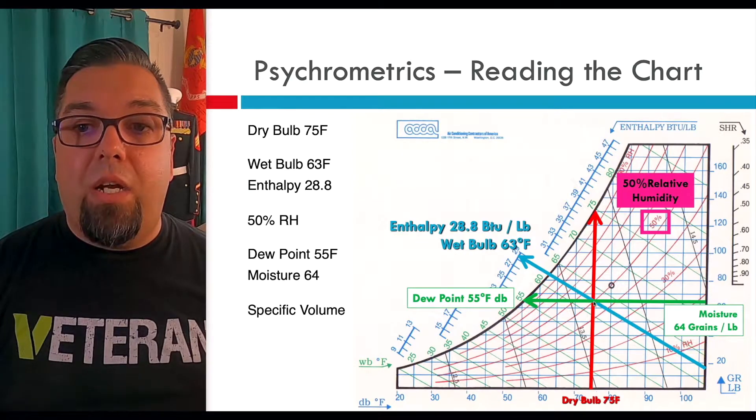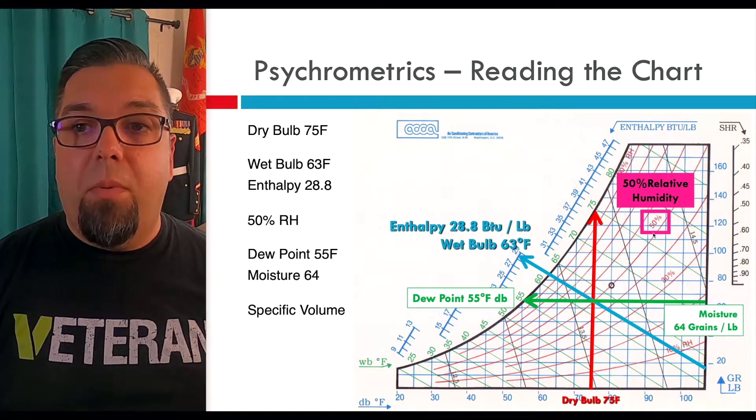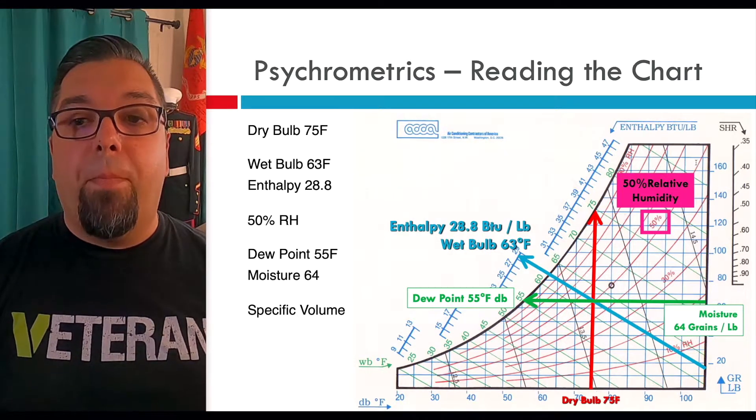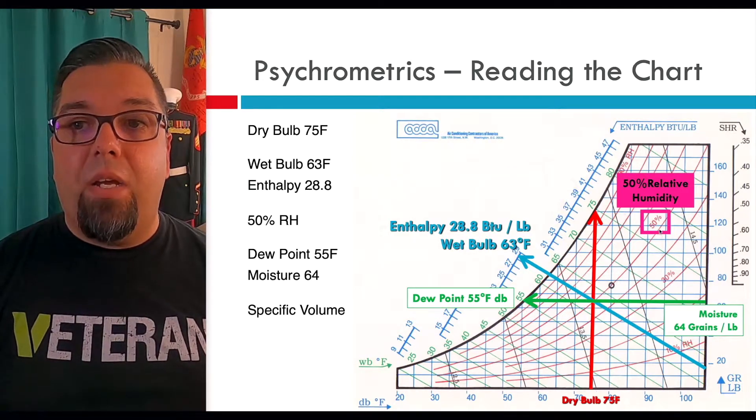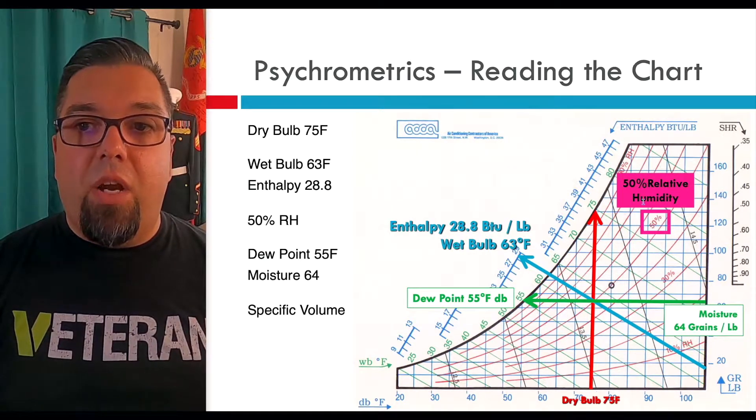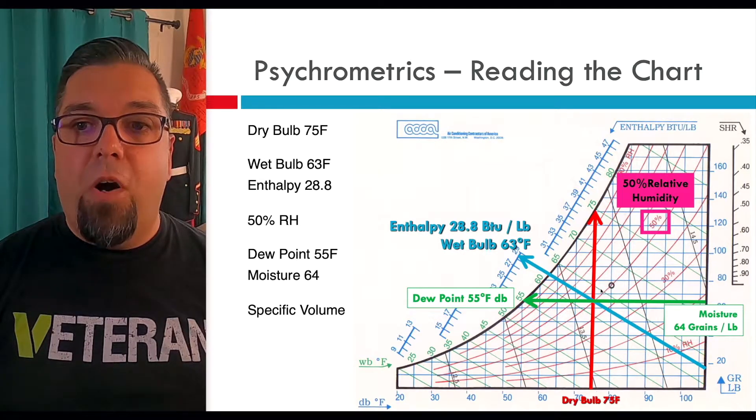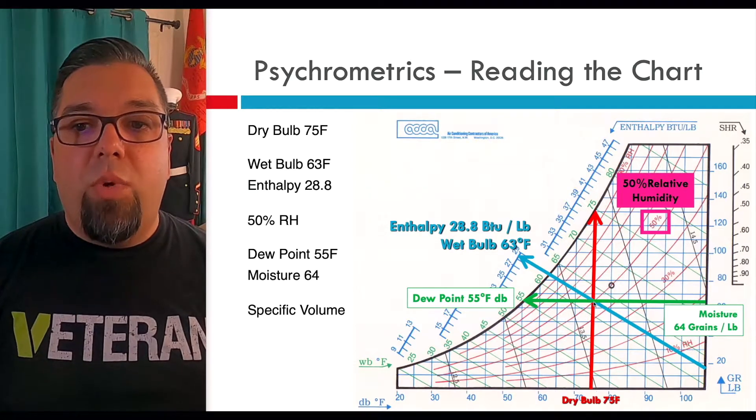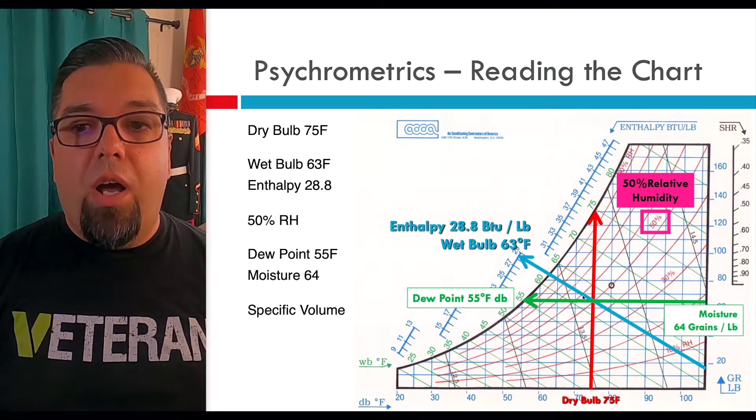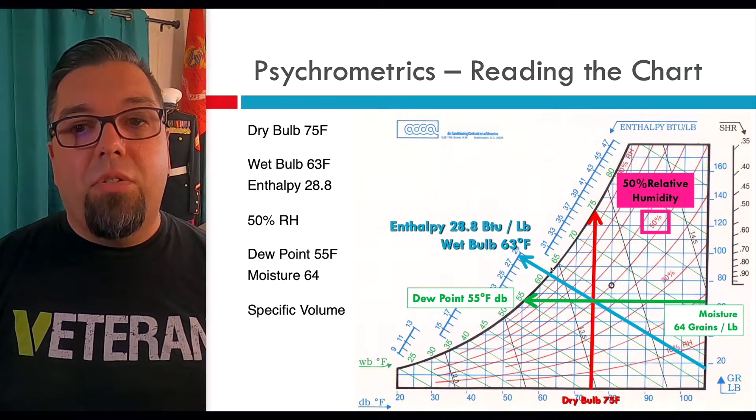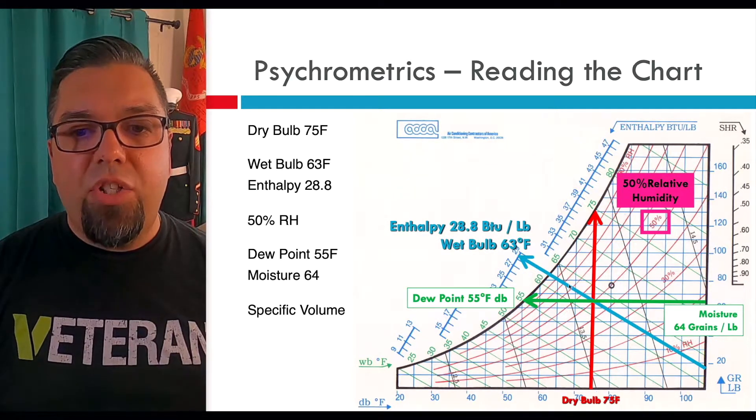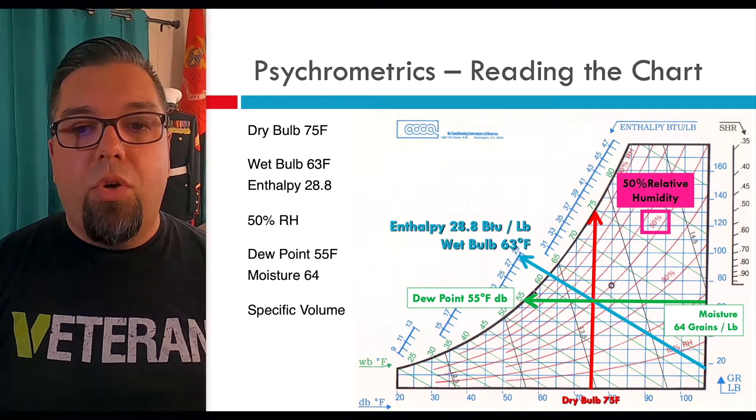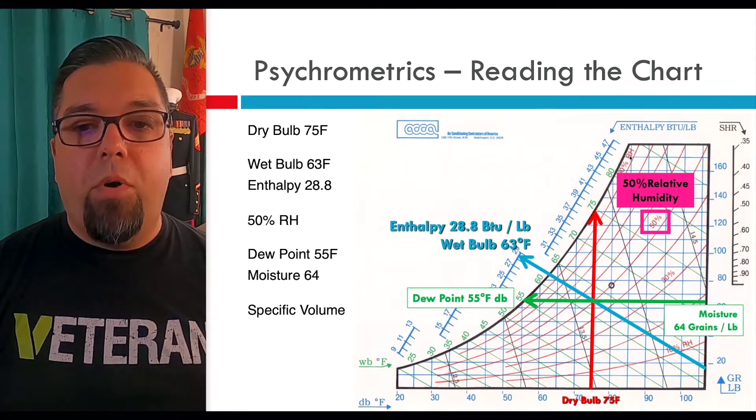As long as you have two pieces of information off the left hand side here you can plot and know everything else that's going on with the air off of the psychrometric chart. In this example I'm going to use our design temperature 75 dry bulb and 50% relative humidity and when I plot that point here right here on this 50% relative humidity, remember relative humidity are these curved lines that go from the bottom left to the top right and it's in pink or red. I blocked off the 50% line so you can see where it intersects our dry bulb at 75 degrees. If we draw a perpendicular line up you can see it's actually going to intersect with 63 wet bulb right here.